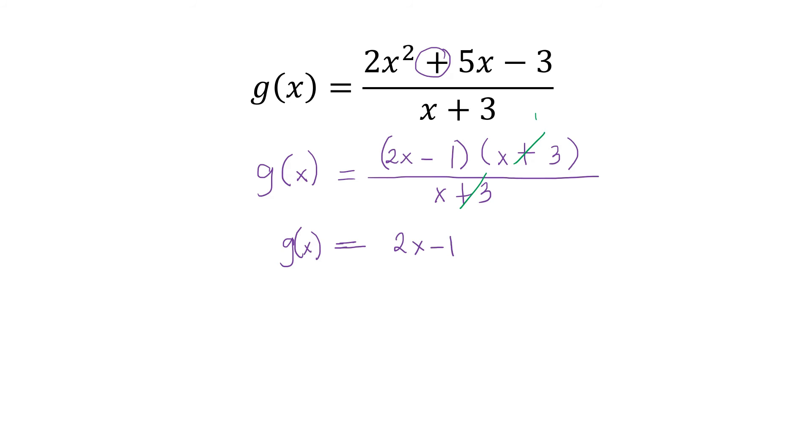Okay, then we may now proceed to step 2. Step 2 is to change y or g(x) to 0. So, it will become 0 and then solve for the value of x or the zero. So, it equals 2x - 1. Or, we may also interchange them.